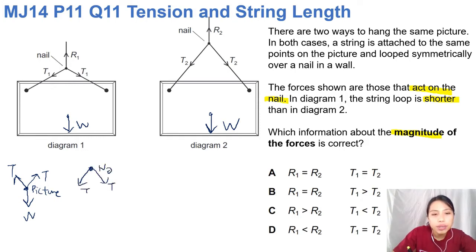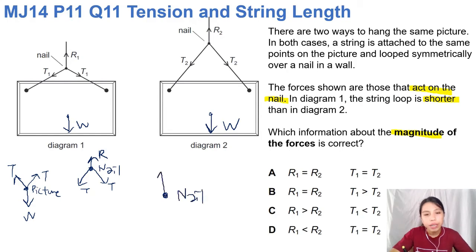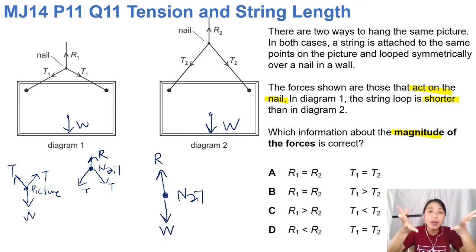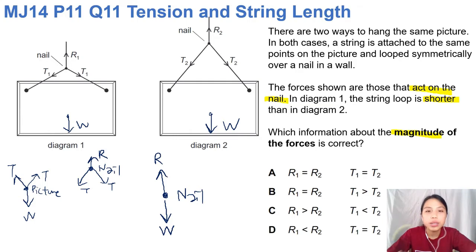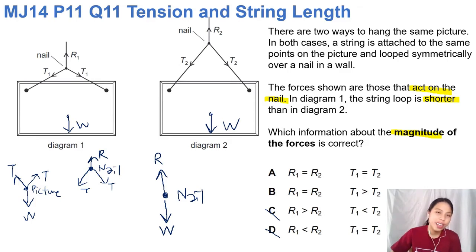The free body diagram for the nail shows the tension forces acting on it, and the nail experiences a reaction force to counter them. The tension forces are intermediary — they transmit the force. So essentially the reaction force on the nail should be the same as the weight of the picture. Same picture frame means the nail should have the same reaction force in both cases — that's how it supports the frame's weight. From this we can eliminate choices C and D. Now, is tension the same or not? Pause and think.